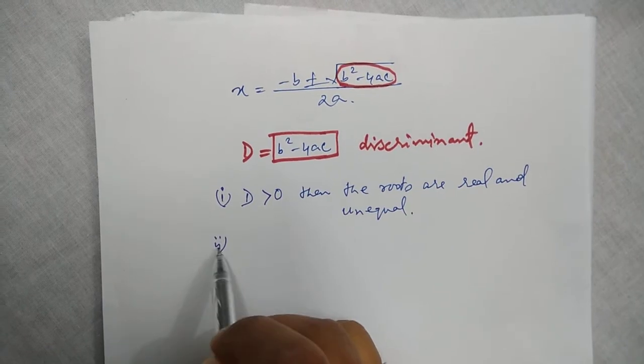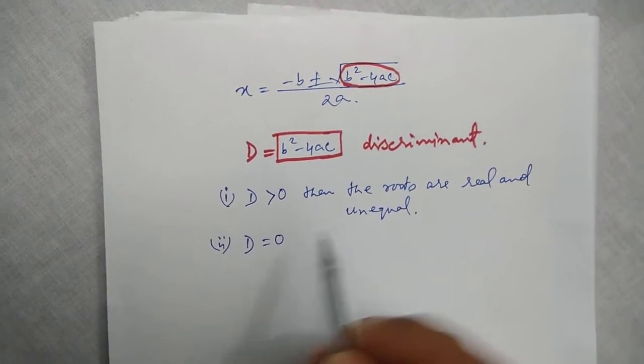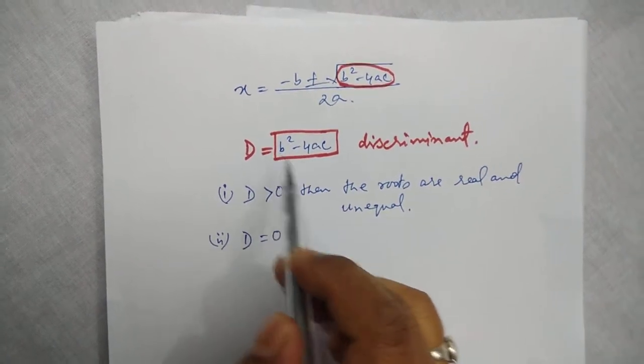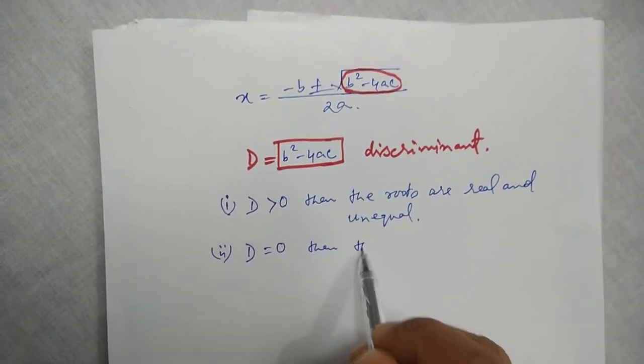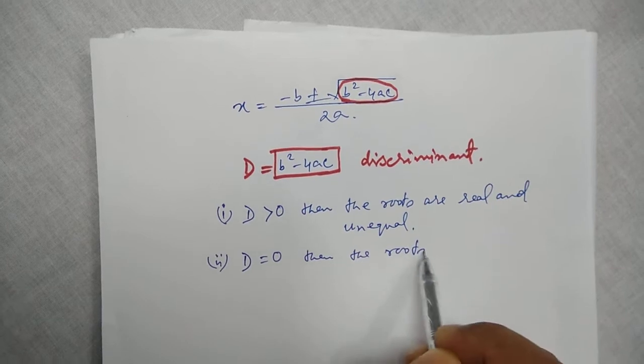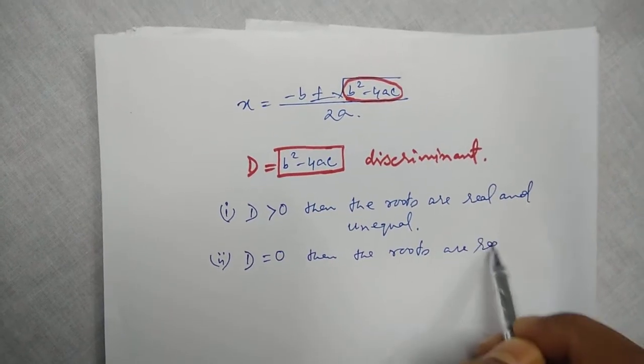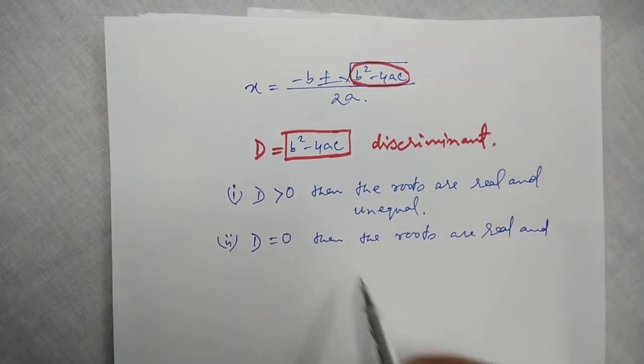Number 2, if D is equal to 0, that means the value of b square minus 4ac equals 0, then we can say that the roots are real and equal.